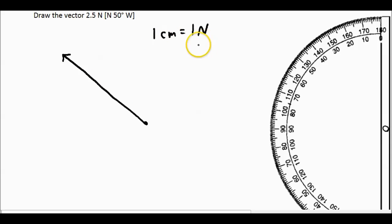We're leaving our scale, and it is 2.5 centimeters long, which represents the 2.5 newtons. And it is north 50 degrees west.